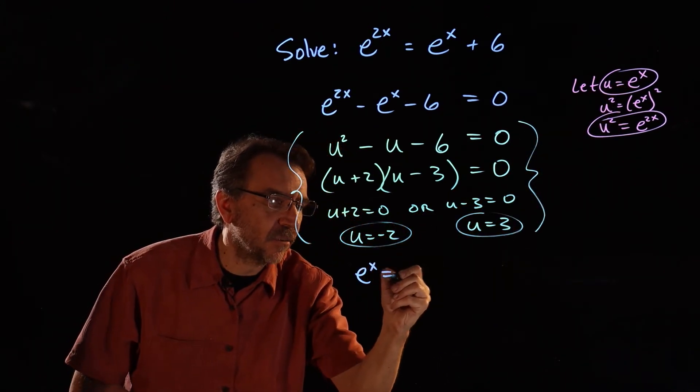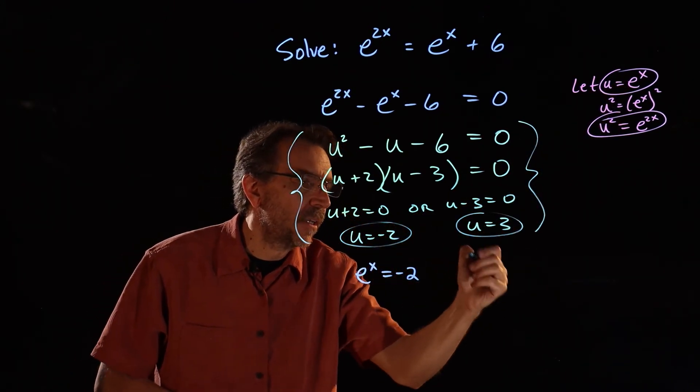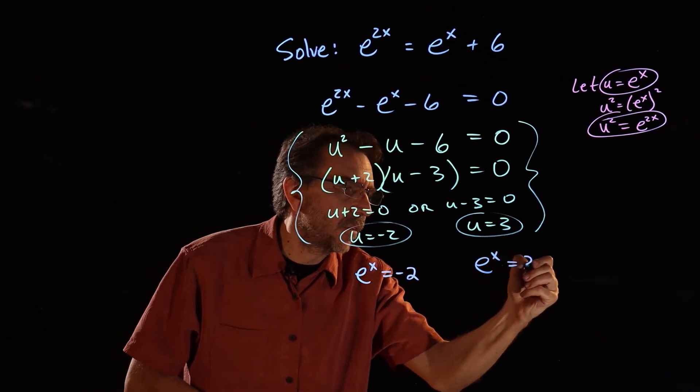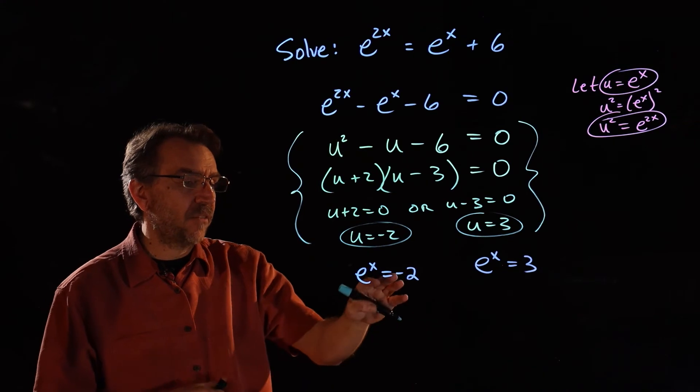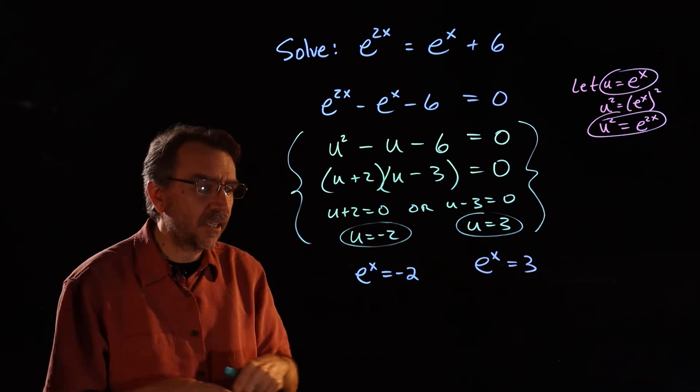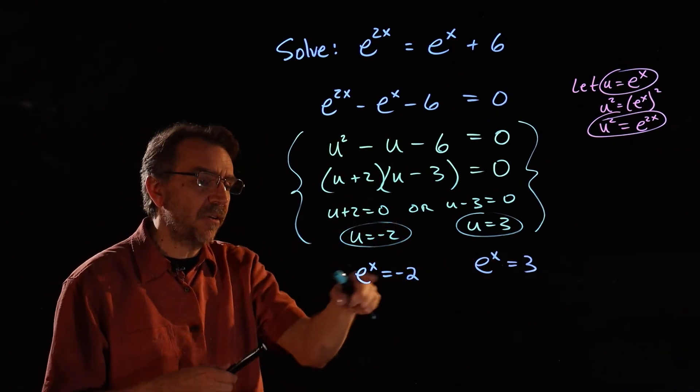So e to the x has to equal negative 2, or e to the x has to equal 3, right? So back substituting what u actually is. Now I have two normal looking exponential equations. And we know how to solve these.